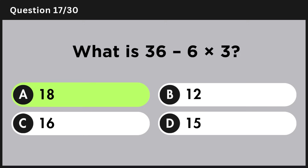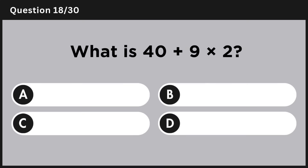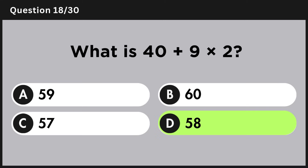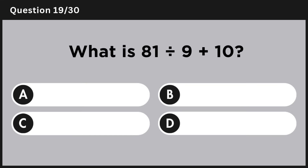Answer A: 18. What is 40 plus 9 multiplied by 2? Answer D: 58. What is 81 divided by 9 plus 10?